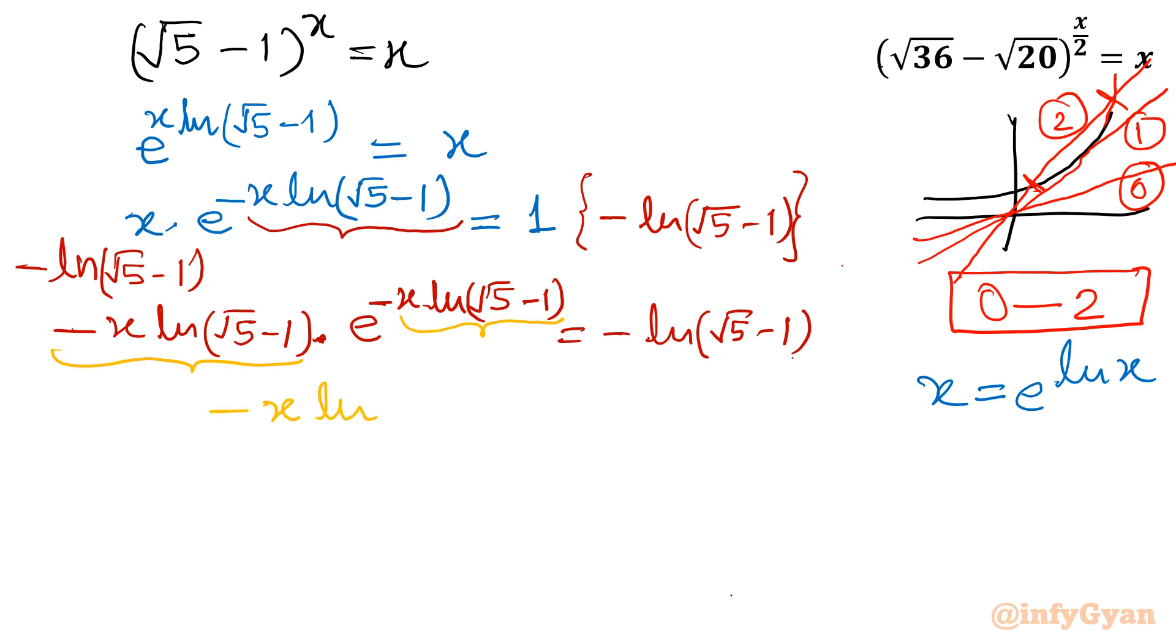So now I can directly write minus x ln root 5 minus 1. I need to take Lambert W function of RHS like this. It would come out like this. Now x value would be minus Lambert W function of negative ln root 5 minus 1 over ln root 5 minus 1. Done.